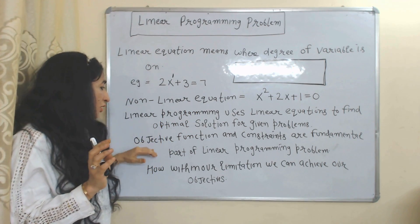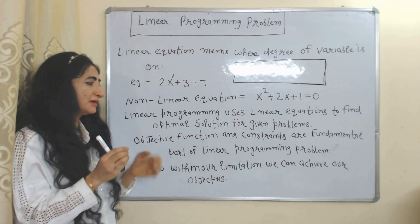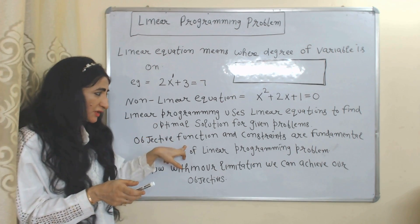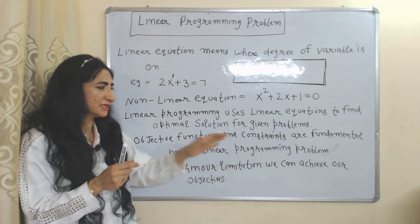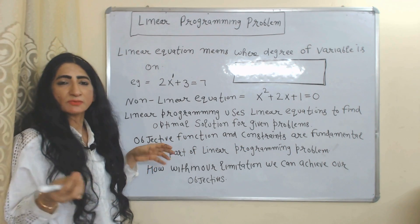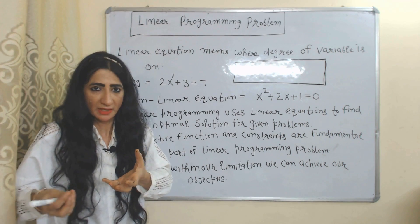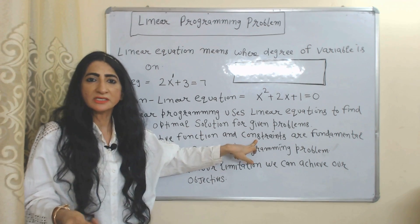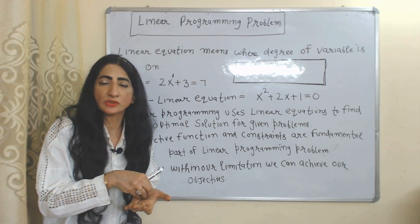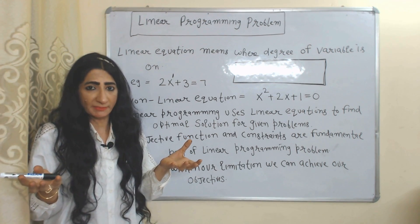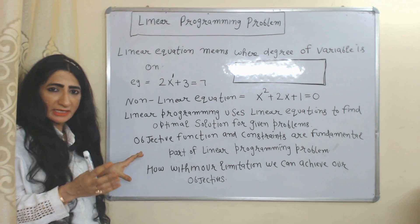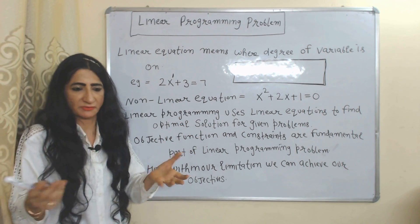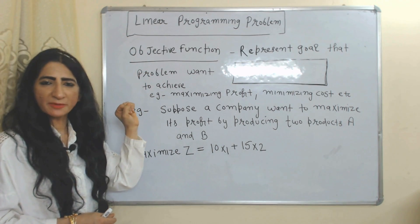Objective function and constraint are fundamental parts of a Linear Programming problem. Objective function means what our objective is — we want to maximize our profit or minimize our cost. Constraint means our limitations, like resource limitations or limited production capacity. Linear programming mainly helps us achieve our objective within our limitations.